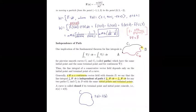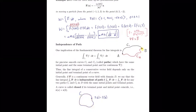More generally, for a continuous vector field F with domain D, we say the line integral is independent of path if the integral of F over c1 equals the integral over c2 for any two paths c1 and c2 in D that have the same initial and terminal points. This is a more general situation — F is not necessarily a conservative field yet. We also need to define a closed curve: a curve is closed if its terminal point and initial point coincide.